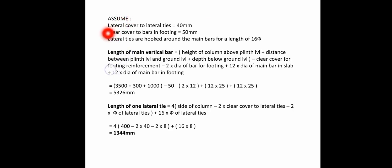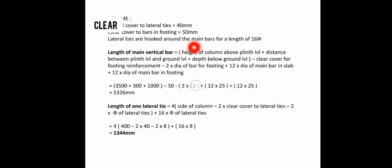The main bar extends 12.5 times its diameter into the 130mm thick slab above. Moving on, we assume lateral cover to lateral ties = 40mm. Clear cover to bars in footing = 50mm. Lateral ties are hooked around the main bars for a length of 16.5 times the diameter. The first step is to calculate the length of the main vertical bar.